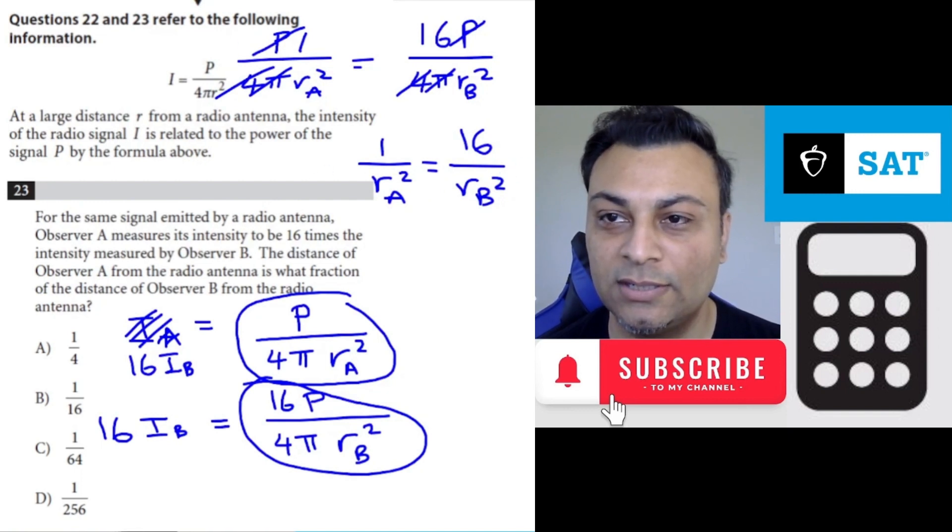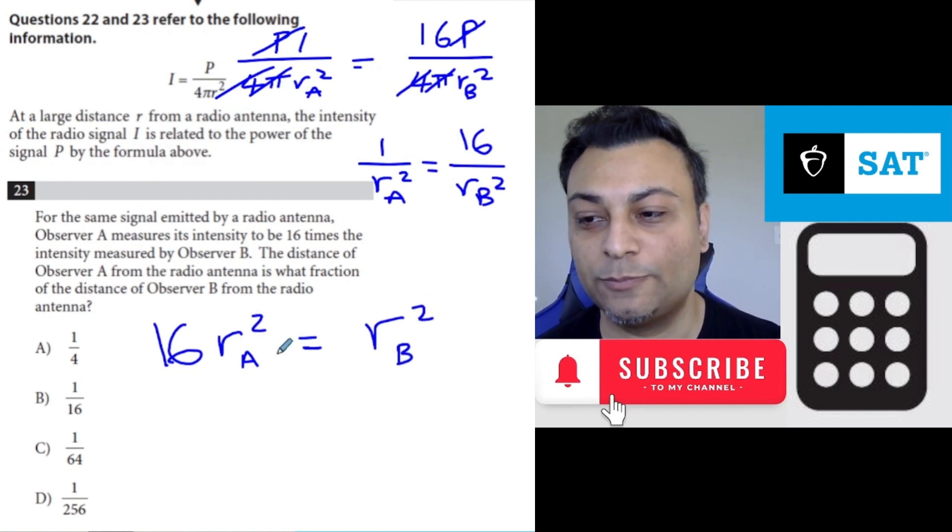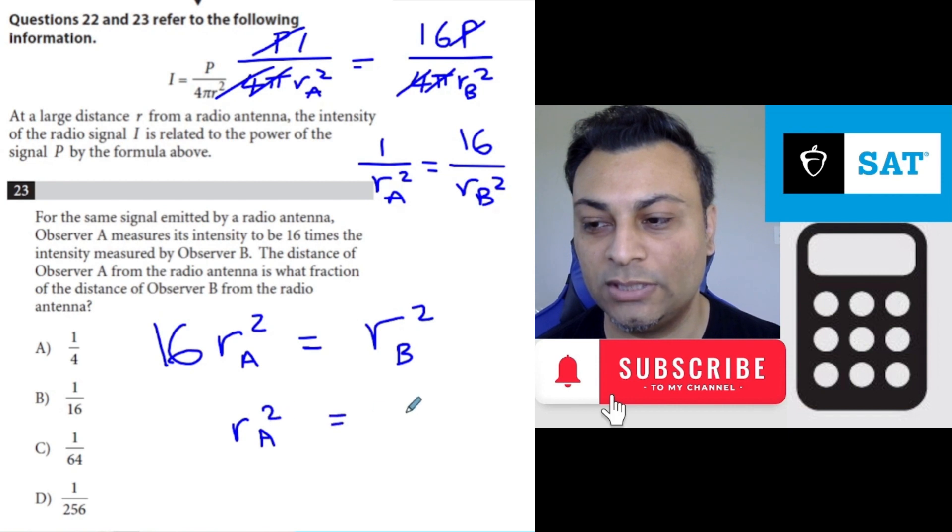So we're almost at the end. Let me erase some of this stuff so I can clear some room. From here you can cross multiply. You get 16 times ra squared is equal to 1 times rb squared. We're trying to express ra in terms of rb, so let's divide both sides by 16. So ra squared is equal to rb squared over 16.